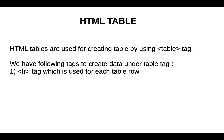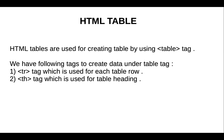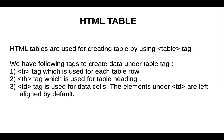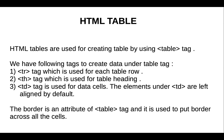First is the tr tag, which is used for each table row. Next is the th tag, which is used for table headings. Next, the td tag is used for data cells — elements under td are left-aligned by default. There is also a border attribute used to add a border across all the cells.